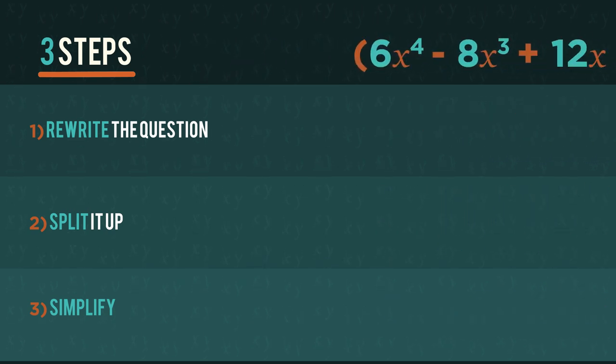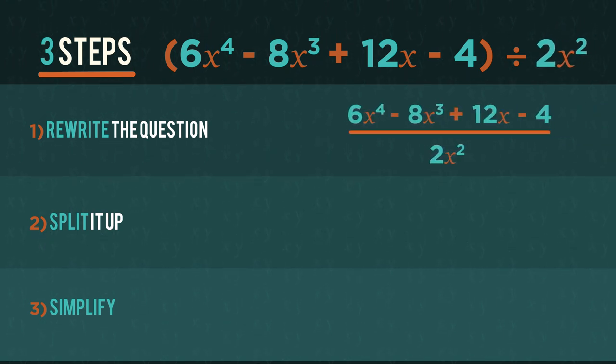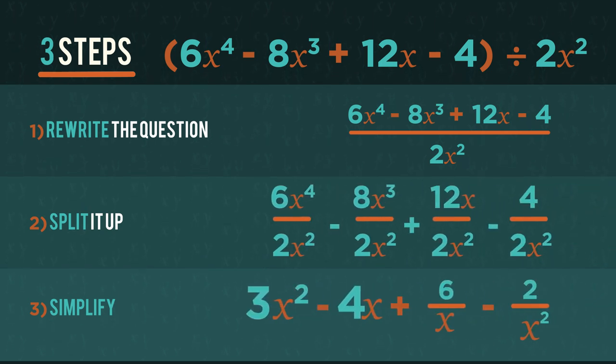We follow the same three simple steps for dividing by monomials too. We write it as a fraction, then split it up, and finish by simplifying. So 6 divides by 2 to get 3, x to the 4 divided by x squared becomes x squared.